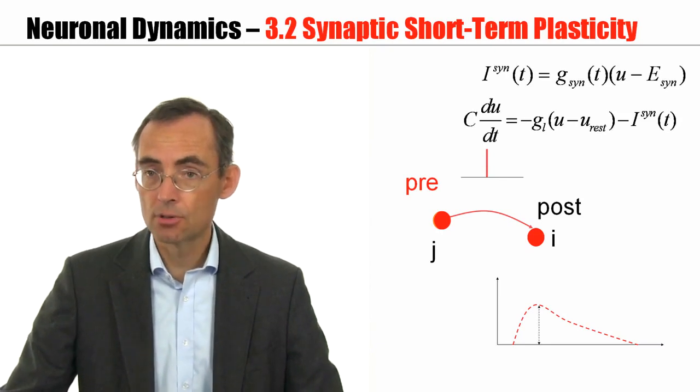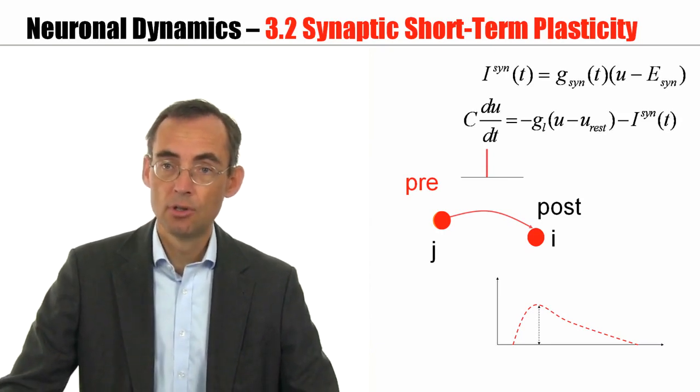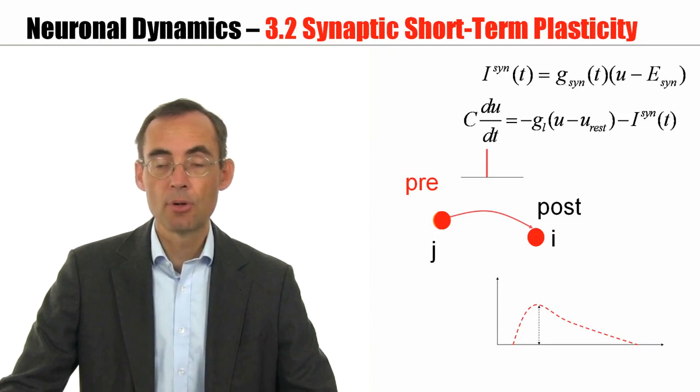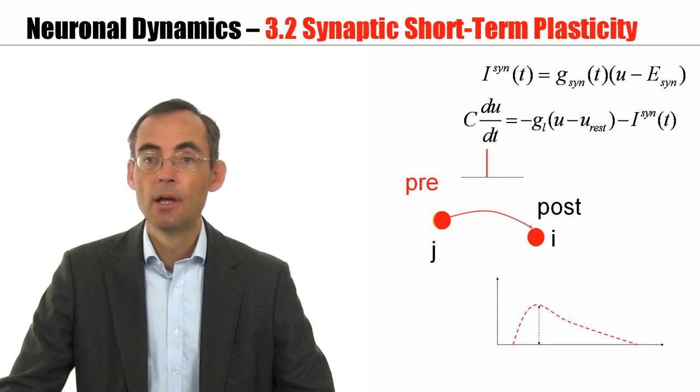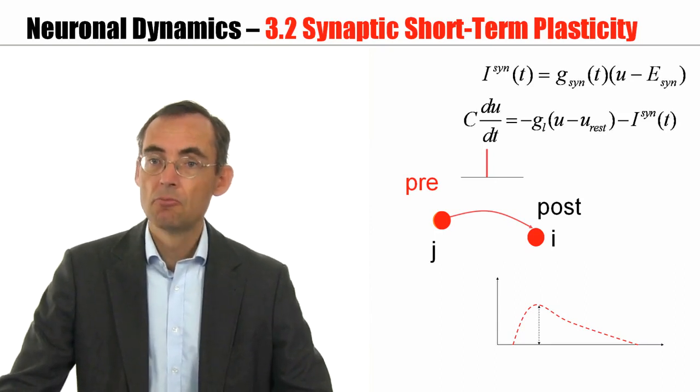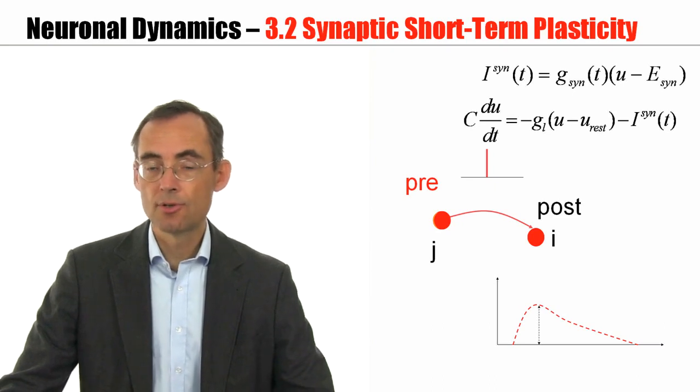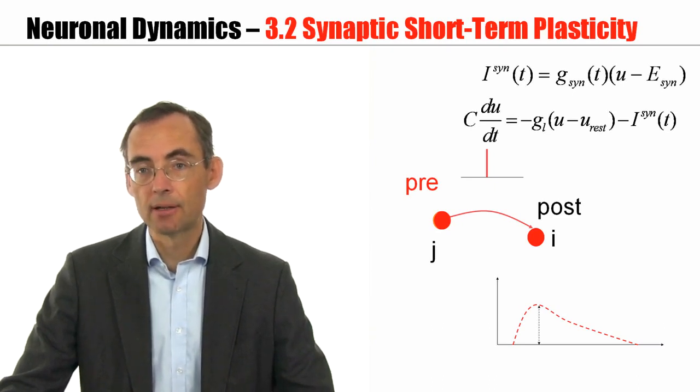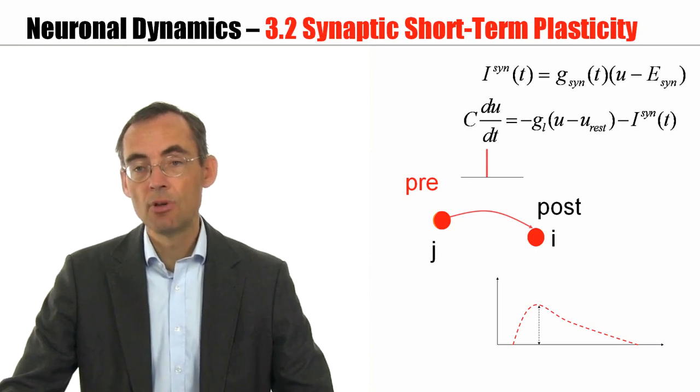An incoming spike causes a post-synaptic potential. You can measure this post-synaptic potential or you can measure the post-synaptic current. And what you find is it increases, goes through a maximum, and then decays back. Now the strength of the synapse is related to the amplitude of this post-synaptic response.